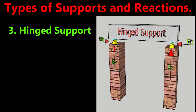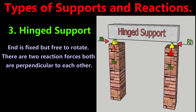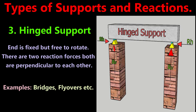4. Hinged or Pinned support. In this type of support, the position of the end of the beam is fixed but it is free to rotate. At hinged supports, the reaction can be in any direction, which is usually represented by its components in two mutually perpendicular directions. This type of support does not provide any resistance to rotation — in other words, it permits rotation freely at the end. Therefore, there are two reaction forces in the case of hinged support. This type of support can be seen in bridges, flyovers, etc.